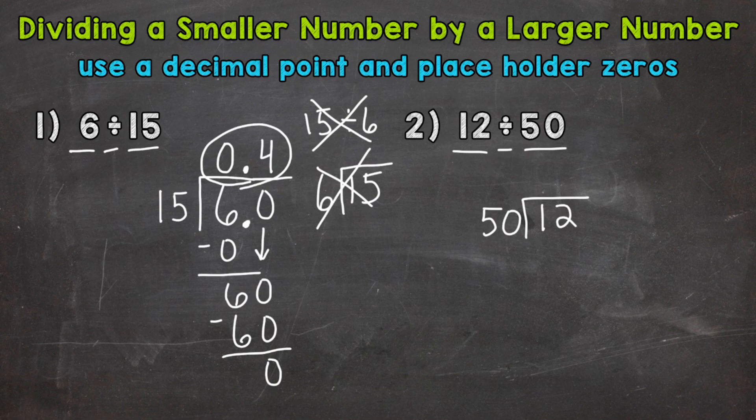Now we're all set up and ready to go through our division process. So how many whole groups of 50 out of 1? We can't do that. So how many whole groups of 50 out of 12? We can't do that either. We can't pull a whole group of 50 out of 12. So let's put a 0 there to hold this place. 0 times 50 is 0. Subtract. We get 12.